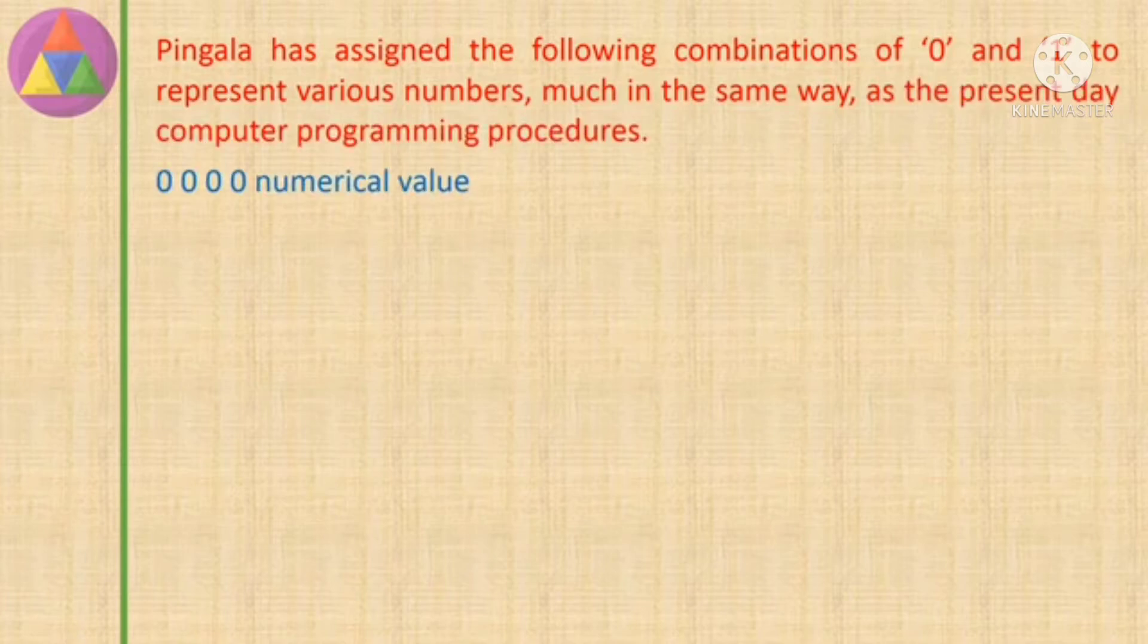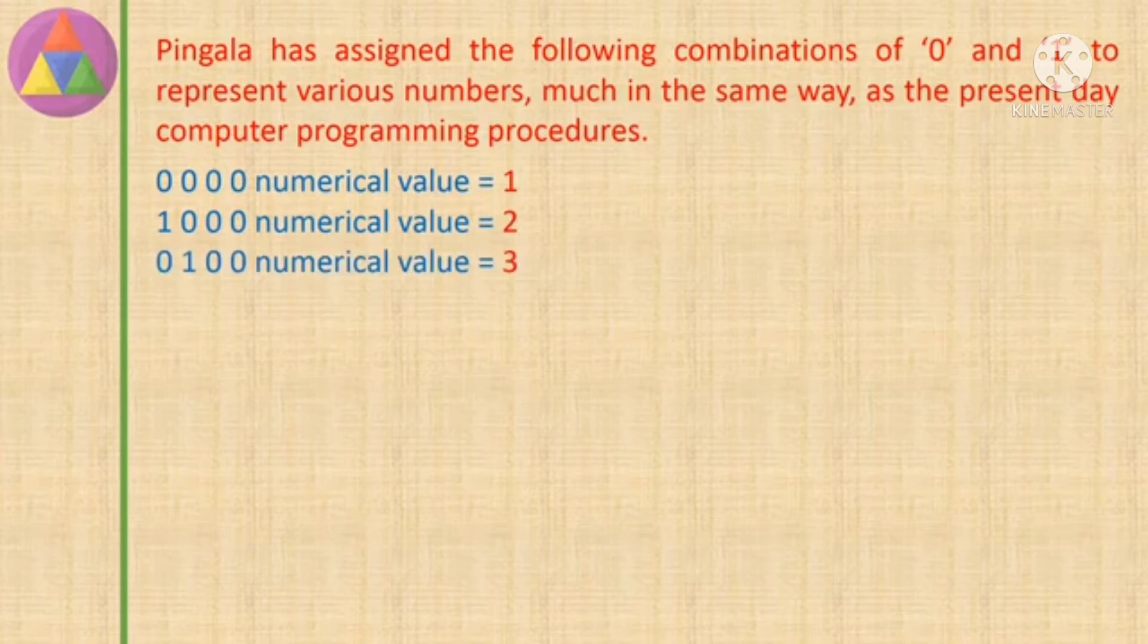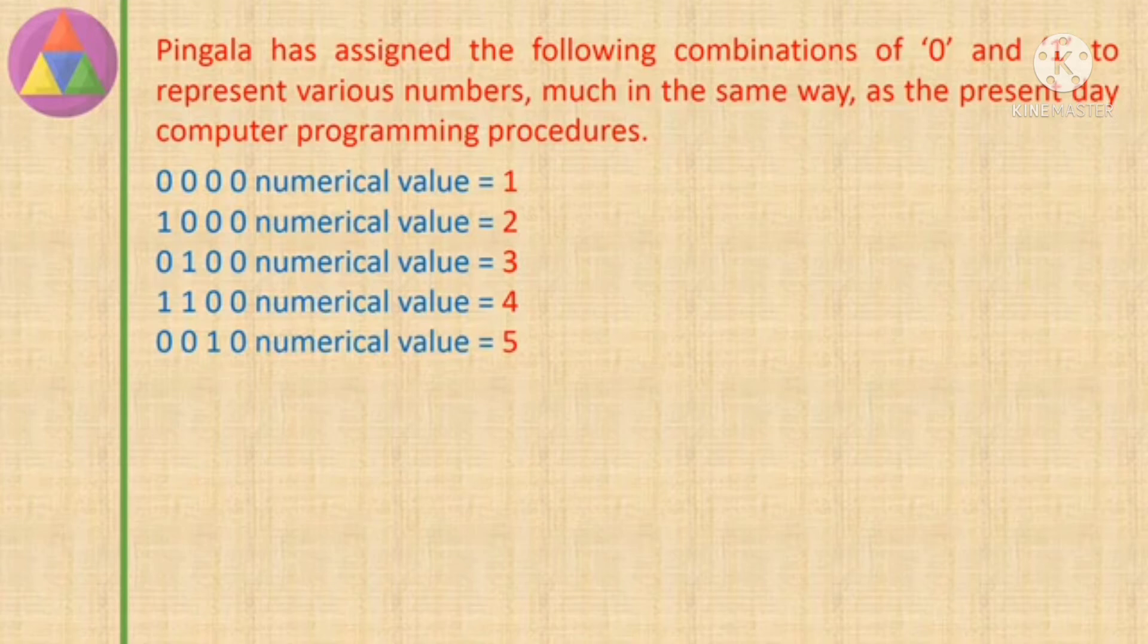0000 numerical value equals 1. 1000 numerical value equals 2. 0100 numerical value equals 3. 1100 numerical value equals 4. 0010 numerical value equals 5.